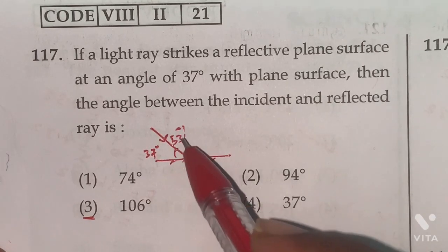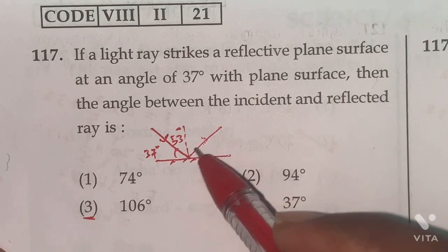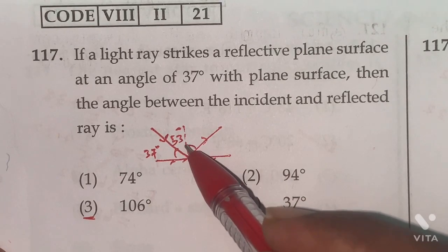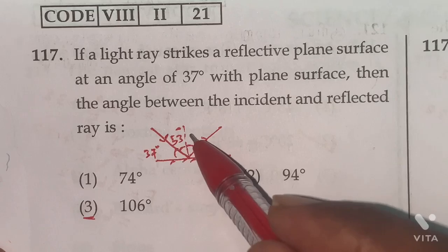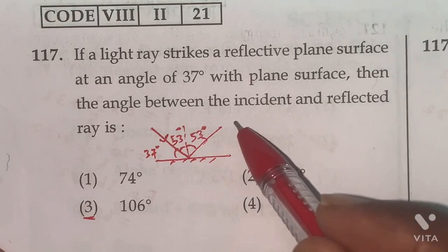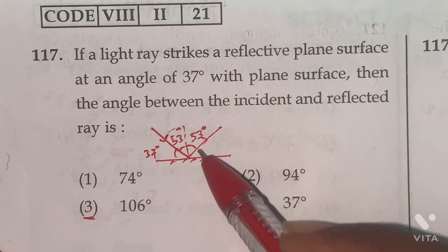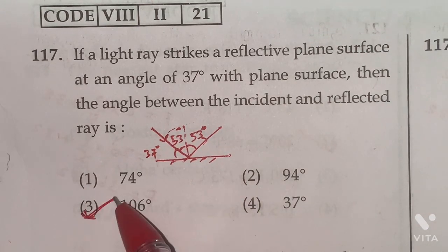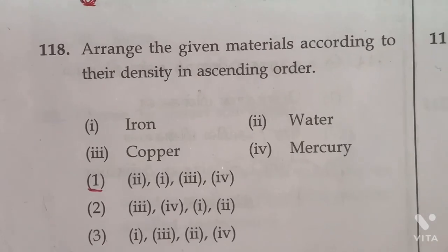This will be angle of incidence. Then this will be angle of reflection. So if angle of incidence 53, angle of reflection also 53. They are asking angle between incident ray and reflected ray, so total 53 plus 53 is 106. Option 3rd one is the right answer.